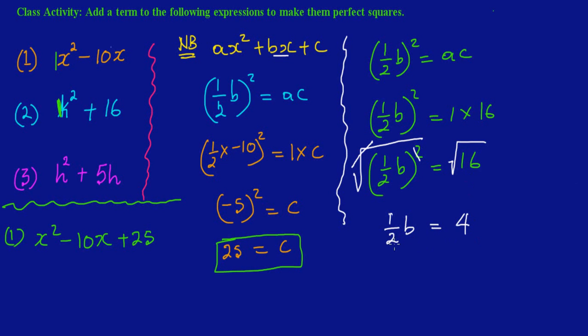We have a half times b. I need to transpose or make b the subject. So a half is multiplying b. A half of b is equal to four. A half is multiplying b, so since it's multiplying to make b the subject, I must divide through by a half.